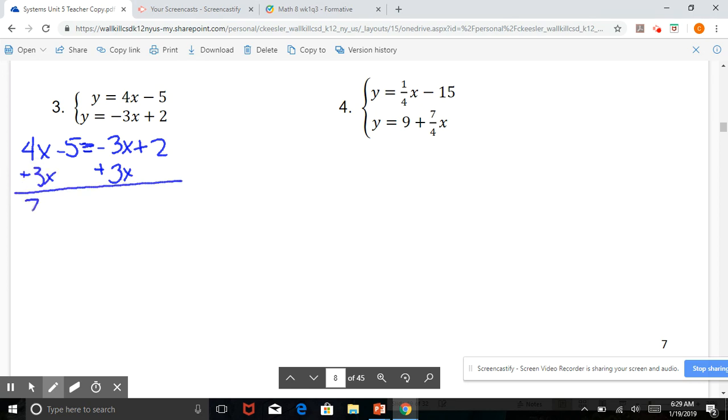And 7x minus 5 now equals positive 2. Add 5 to both sides. And 7x equals 7. Divide by 7. And x equals 1.